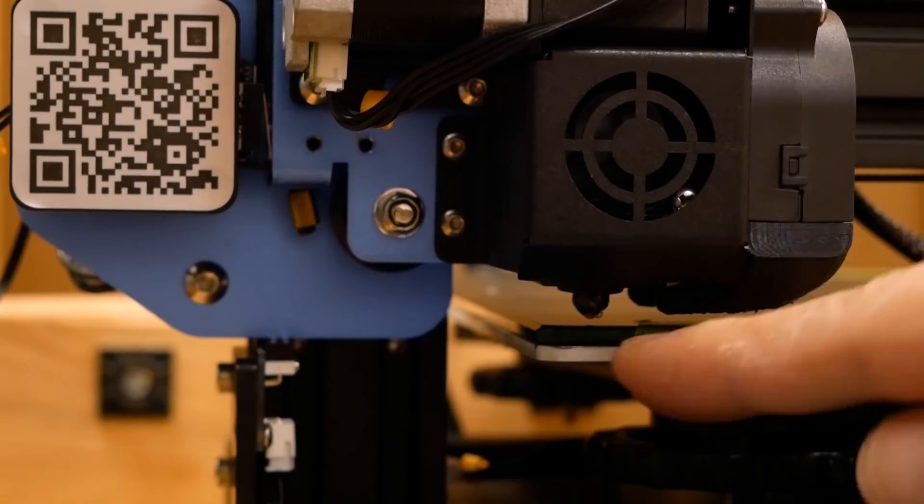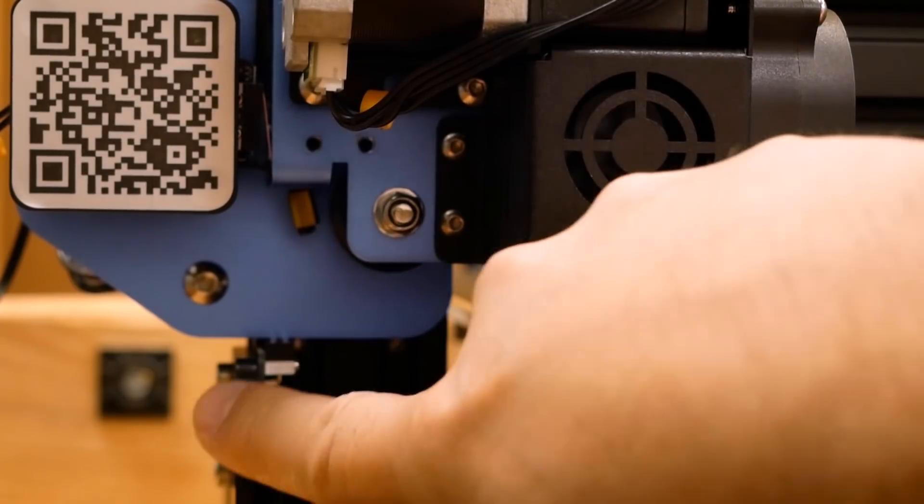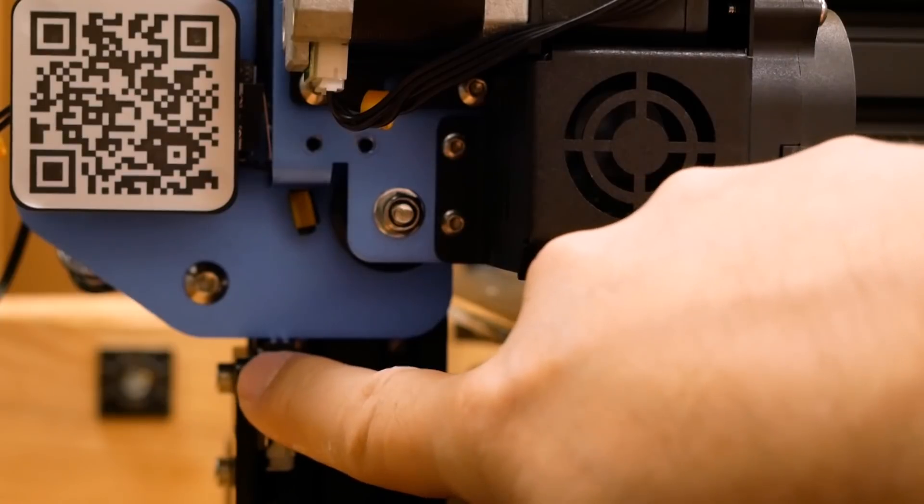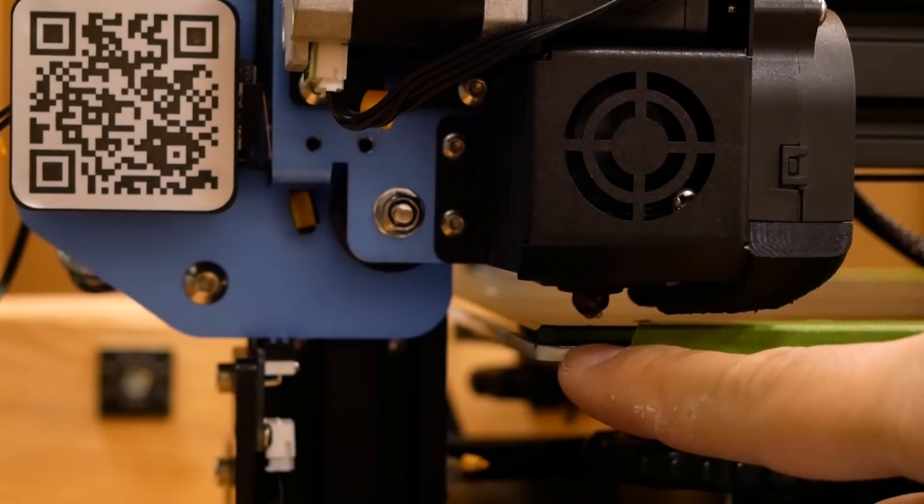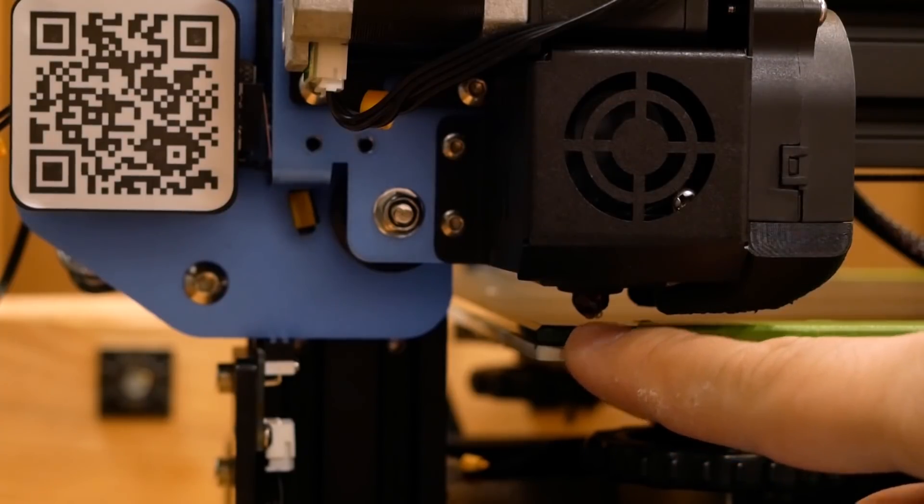If you have more spacing than that, if your nozzle is higher, just loosen the screws on the z-axis, lower it by a couple of millimeters, and redo the auto home process. And each time you do that the nozzle will move slightly lower, slightly lower.